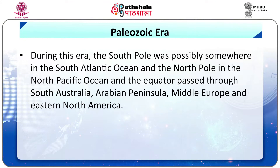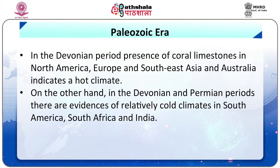During this era, the South Pole was possibly somewhere in the South Atlantic Ocean and the North Pole in the North Pacific Ocean, and the equator passed through South Australia, Arabian Peninsula, Middle Europe and Eastern North America. In the Devonian period, presence of coral and limestone in North America, Europe, Southeast Asia and Australia indicates a hot climate. On the other hand, in the Devonian and Permian periods, there are evidences of relatively cold climates in South America, South Africa and India.